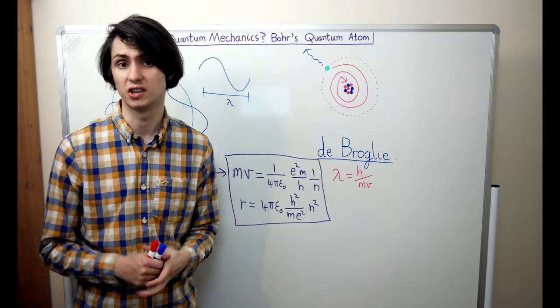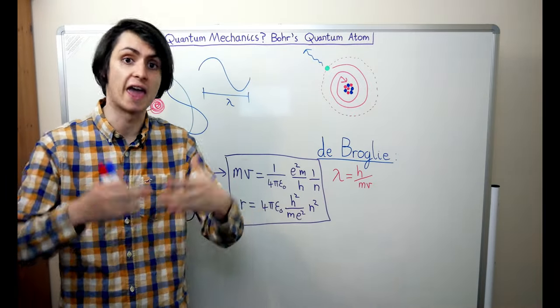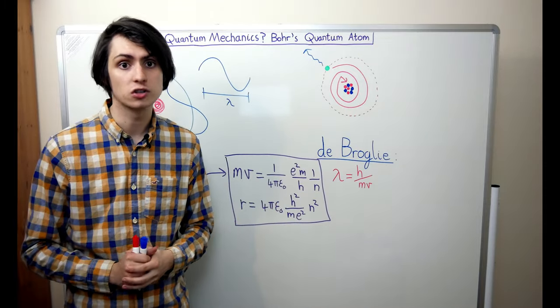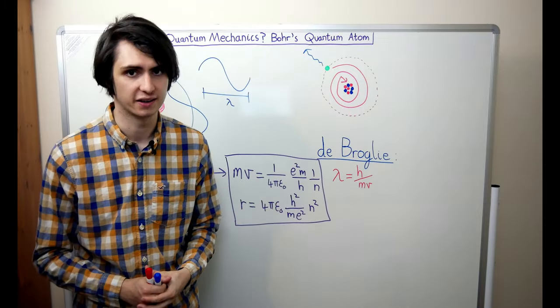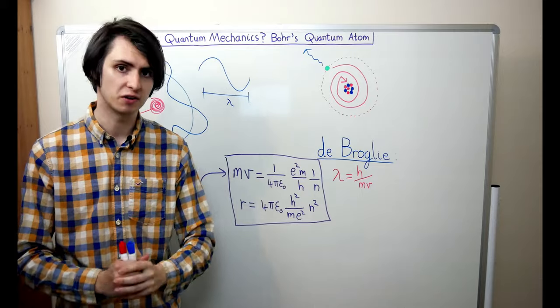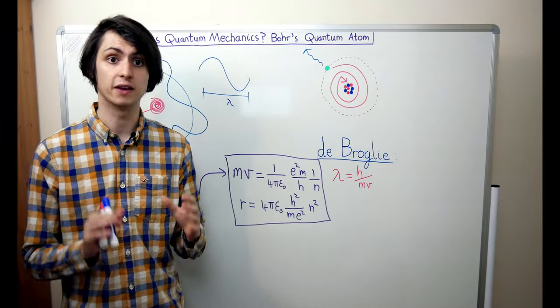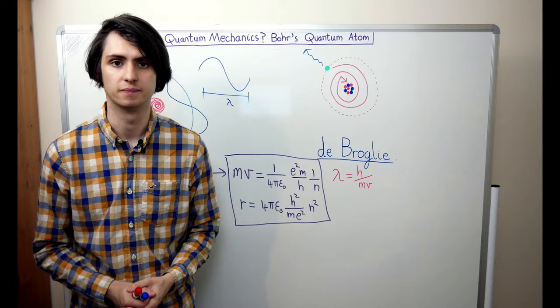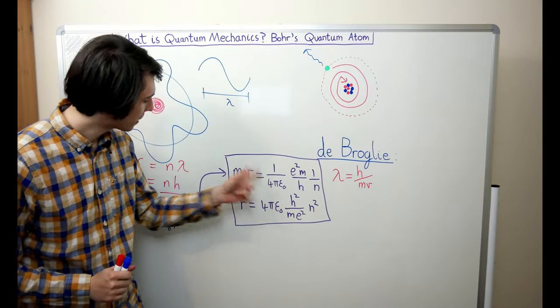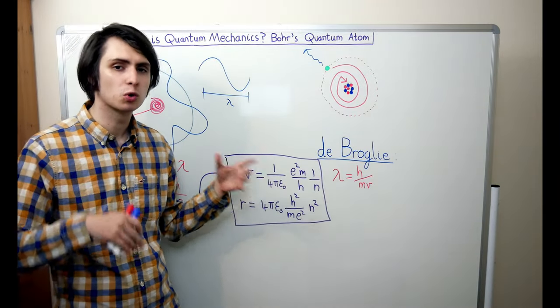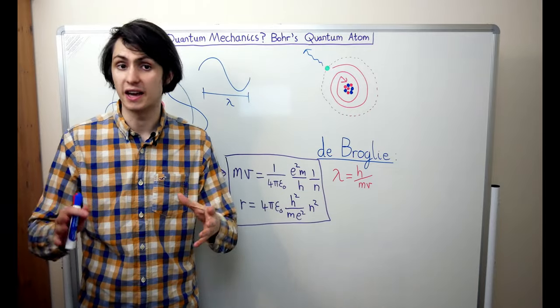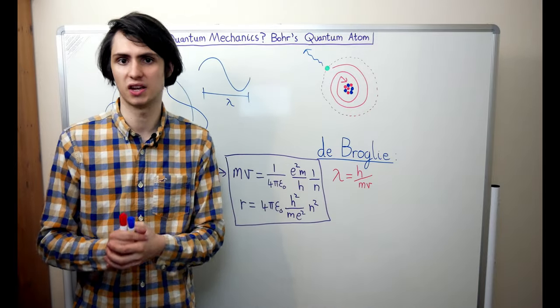What this tells us is that electrons can't just orbit at any old radius, and they can't just have any old momentum either. They can only orbit at very specific distances, and they can only take certain values of momentum. We say that the orbits and the momentum of the electron have become quantized. There are only a discrete, not a continuous set of them.